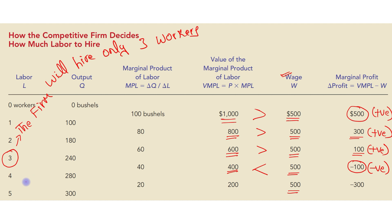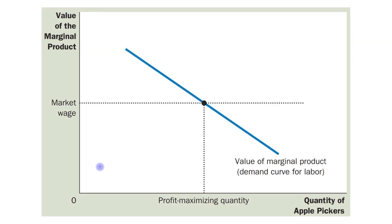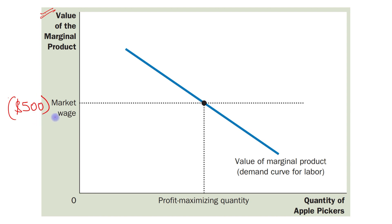Because hiring the fourth worker is unprofitable, the firm will hire only three workers. On the vertical axis we have the value of marginal product of labor, and on the horizontal axis the quantity of apple pickers. The market wage is a horizontal line — constant at $500 in our case.